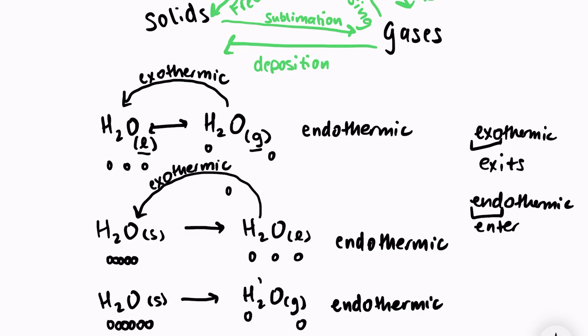Going back in the other direction, going from gaseous water to solid water, there had to be some sort of release of energy. Our particles that were full of energy, moving around quickly, have now become particles that are close together, barely moving. So energy had to exit the system. So this would be an exothermic change.